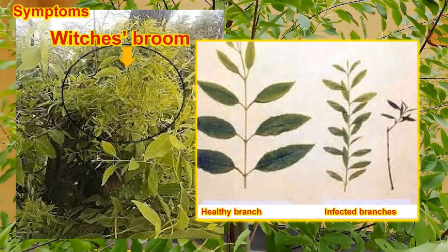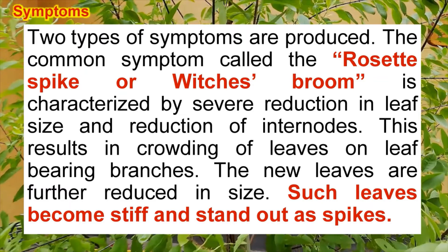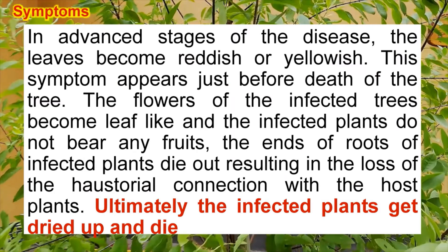This is another picture showing the witch's broom form. Sandal spike disease is also known as witch's broom. In the rosette spike or witch's broom type, the leaf size is reduced, the leaves become stiff, and they look like an inflorescence. In advanced stages, the leaves become reddish and yellowish — symptoms that appear just before the death of the plant, by which time the plant would have been completely infected.